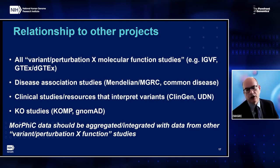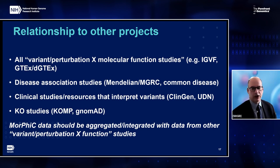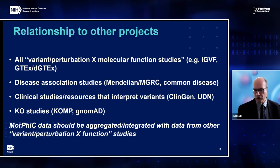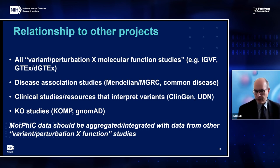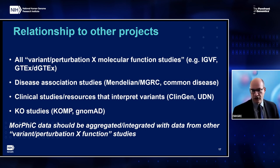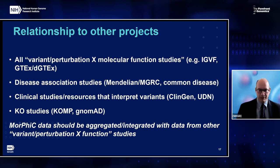Regarding relationships to other studies, we think MORPHIC data will be valuable on their own but are likely most useful in combination with other functional variant association data to provide insight into gene function and mechanisms of phenotype. There are clear relationships and connections to other projects — mostly complementary. Examples include disease association studies in Mendelian and common disease, clinical resources that interpret variants, and other knockout studies such as COMP. There is an obvious connection to COMP, which has anatomical and physiological knockout phenotypes but not so much the molecular and cellular ones. COMP could also be useful in prioritizing genes and thinking about appropriate assays.